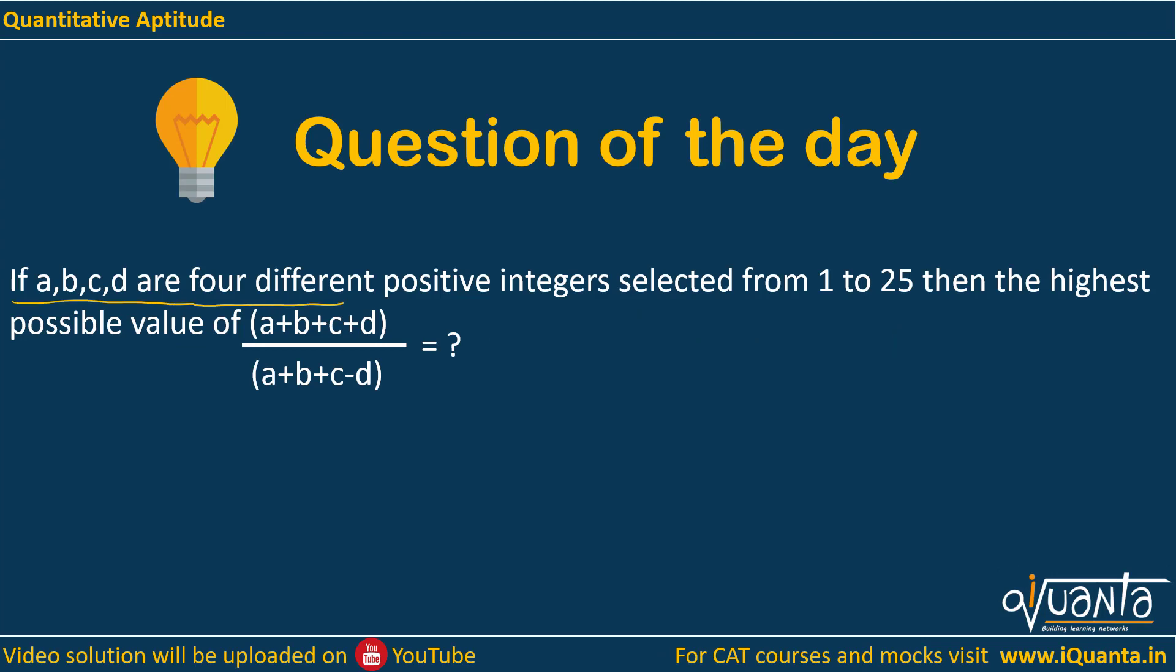So the question is: if a, b, c, d are four different positive integers selected from 1 to 25, then the highest possible value of (a+b+c+d)/(a+b+c-d) will be equal to?